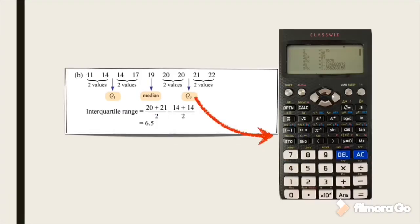For Question B, the first quartile Q1 is the average of 14 plus 14 divided by 2, and Q3 is 20 plus 21 divided by 2. The interquartile range is 6.5 and the median is 19. You can check this with the calculator.